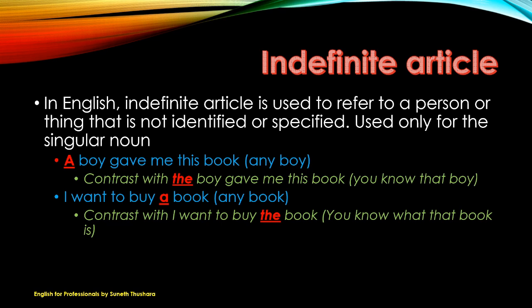Contrast with 'I want to buy the book' — you know what that book is. For example, you and your friend talked about a good book that has come from England, so you want to buy it. Then today your friend asks where are you going, and you say 'I want to buy the book.' So see the difference: 'a book' can be any book; 'the book' — you know it. That is why it is called the indefinite article — it is not defined.